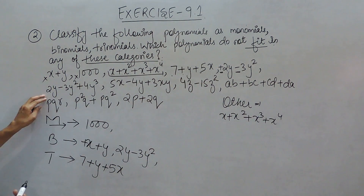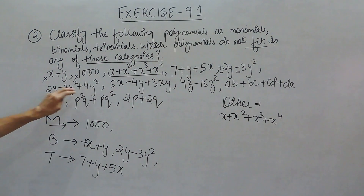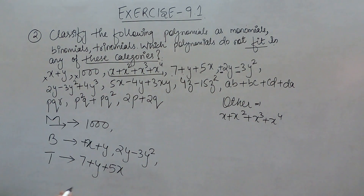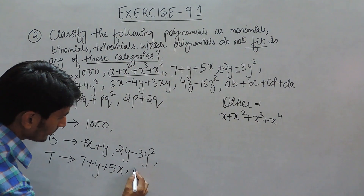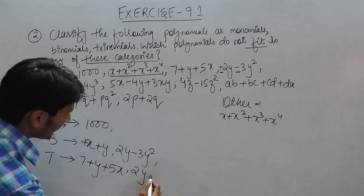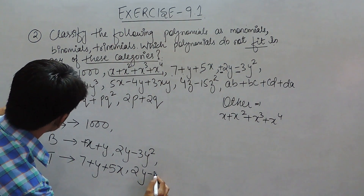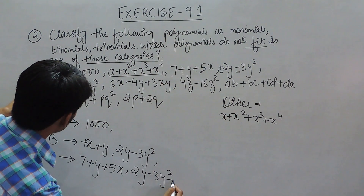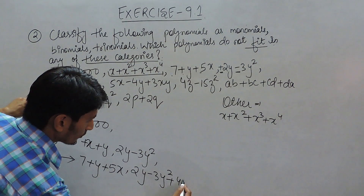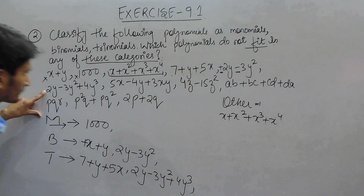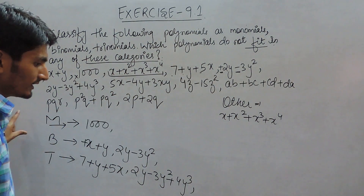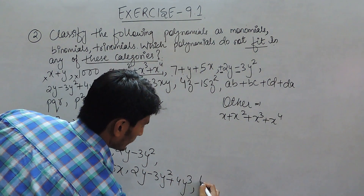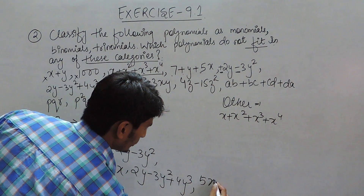Trinomial. In this term, again, one, two, three — there are three signs or three terms. So again it should come in the trinomial category. This is 2y minus 3y² plus 4y³ — one, two, three terms. So again it should come in the category trinomial.